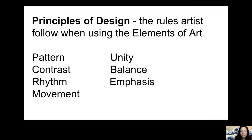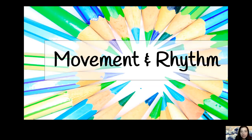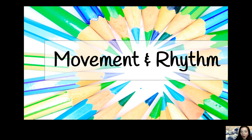Let's get started. We're talking about the principles of design — the rules an artist uses when they are using the elements of art. Last week we talked about pattern and contrast. This week we are talking about movement and rhythm. I bet you've heard of those words before, maybe in PE or in music, but how do we use them in art?